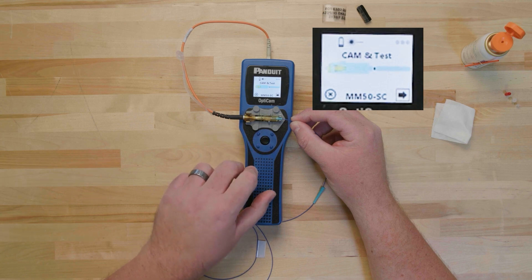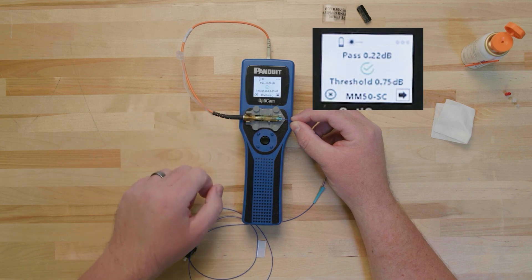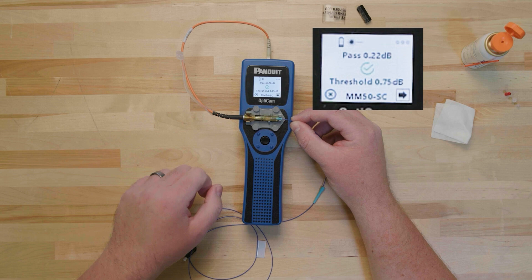The tool's default pass value is 0.75 dB insertion loss, but this value can be adjusted in the tool settings if the job requires.